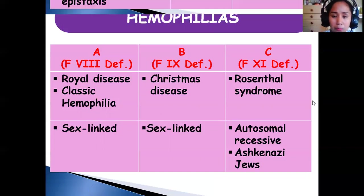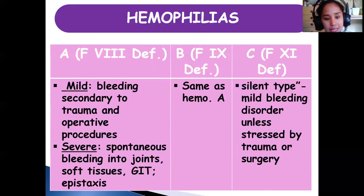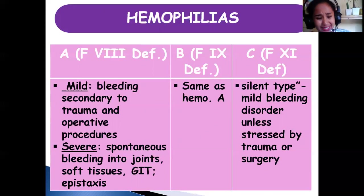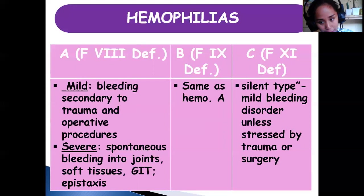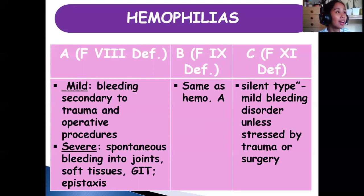There is bleeding and hemoarthrosis in hemophilia. Hemophilia spans from mild to severe depending on the activity of factors 8 and 9. In severe cases, there is spontaneous bleeding into joints, connective tissues, soft tissues, the gastrointestinal tract, and epistaxis. The severity depends on factor activity levels as shown in your notes.